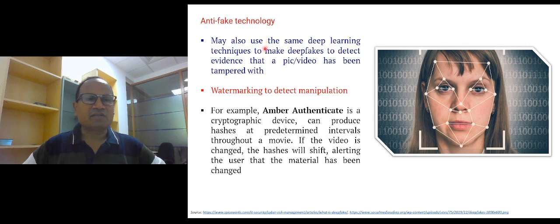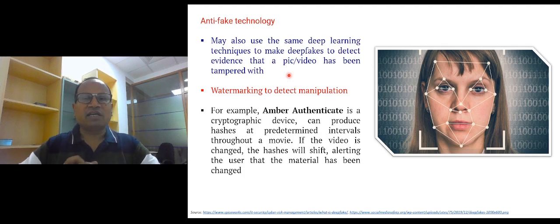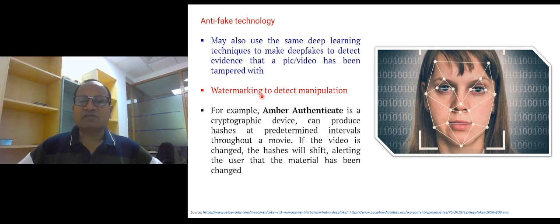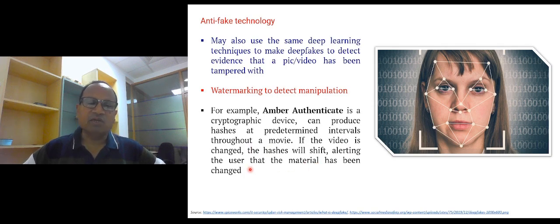As far as deepfake technology is concerned, we may use the same deep learning to detect evidence that a video or picture has been tampered with. We can also use watermarking to detect manipulation or tampering in video or pictures. For example, there is a cryptographic device called Amber Authenticate, which can produce hashes at predetermined intervals throughout a video. If the video is changed, the hashes will change, alerting the user that the media has been tampered.